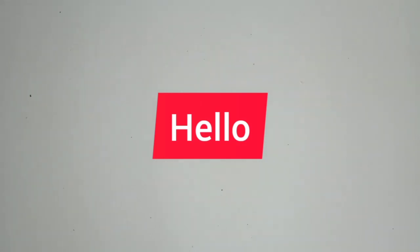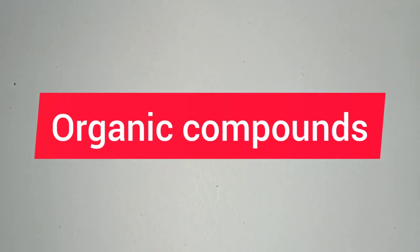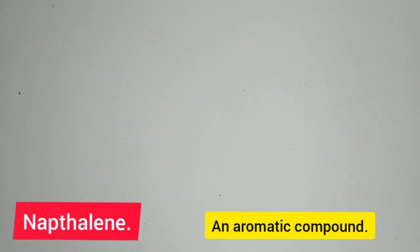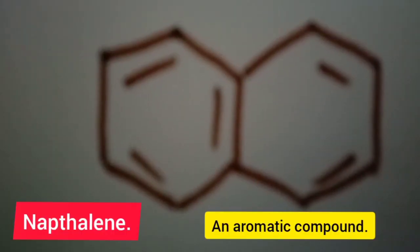Hello, let me draw the structures of some organic compounds which are very popular nowadays. Naphthalene is an aromatic compound. See the structure of naphthalene.